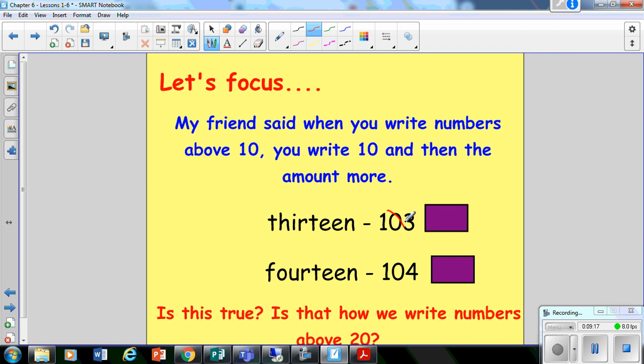So we don't write 13 like that. Big cross. We write 13 with 1 ten and we just add the three ones at the end. Okay. We don't put a zero in the middle because that becomes a completely different number. And the same goes for 14. Just got one 10. Don't put a zero in the middle. Just put the four ones at the end.